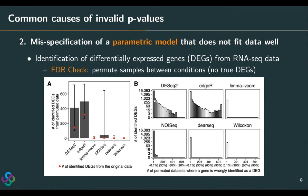On the right-hand side, we can see the distribution of the proportion of permuted datasets where a gene is mistakenly identified as a DEG. DESeq2 and edgeR have this proportion very large, meaning many genes were frequently identified as DEGs from many permuted datasets by mistake. We also compared with other popular methods: limma-voom, NOISeq — a nonparametric method used by the GTEX consortium — DESeq, the newest nonparametric method that claimed to address the FDR control issue of DESeq2 and edgeR, and the classical Wilcoxon rank-sum test. Interestingly, in this dataset and others we compared, the Wilcoxon test — the most classical method — actually had the best performance.